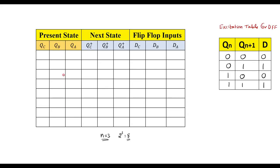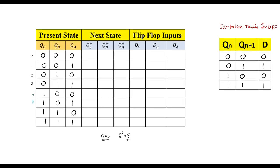The possible present states in binary are: 000 (0), 001 (1), 010 (2), 011 (3), 100 (4), 101 (5), 110 (6), 111 (7). As mentioned, in mod 6 counter the count goes from 0 to 5: 0→1, 1→2, 2→3, 3→4, 4→5, then 5 goes back to 0. We have to fill the truth table accordingly.